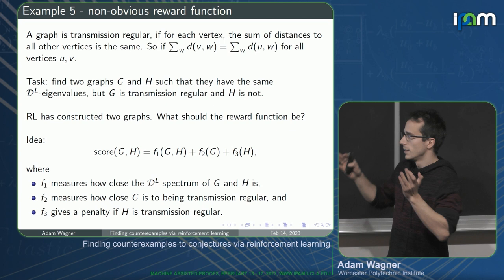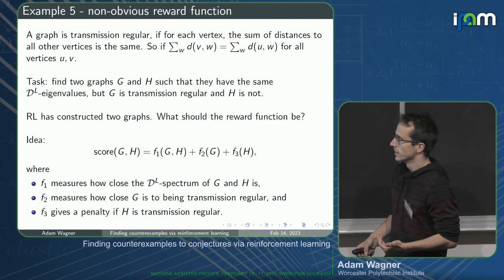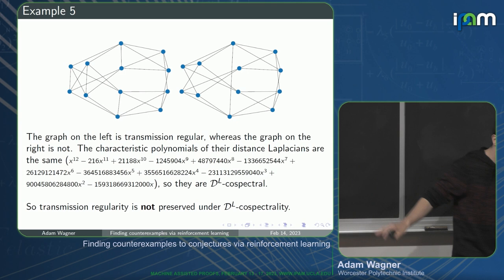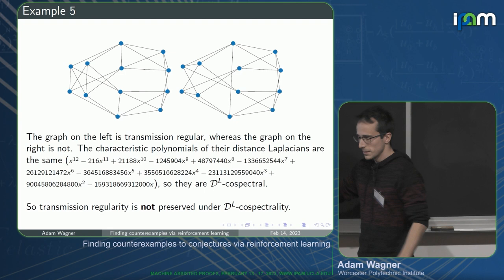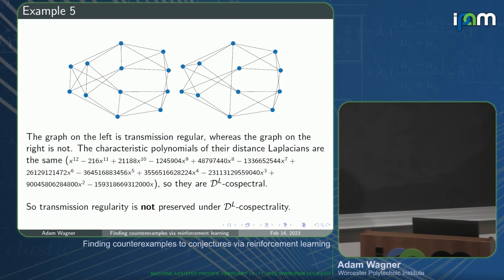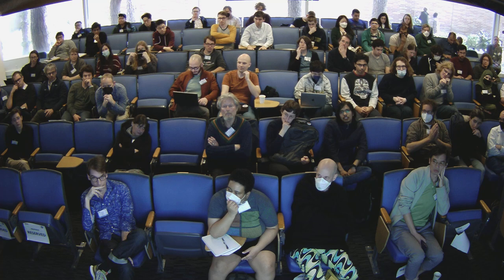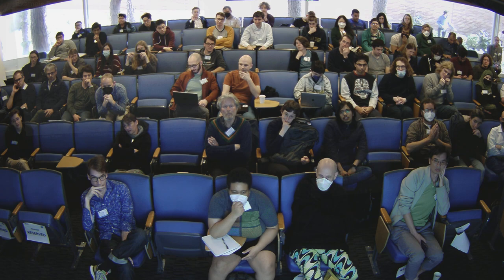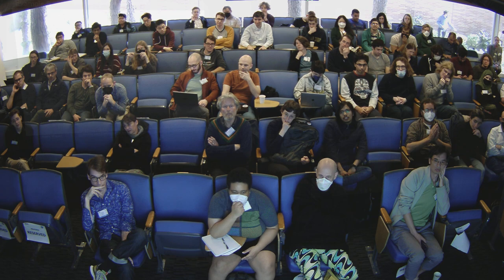It turns out such graphs do exist - the property is not preserved under being co-spectral. The score function was simply the sum of the three components. I got very lucky that the counterexample was small enough for this method to find it. If the smallest counterexample had been just a little bit larger, I don't think I would have found it with this method, and other methods are probably much better for these types of problems.